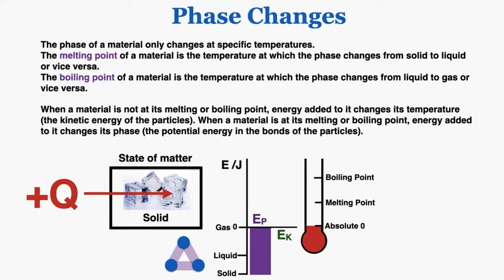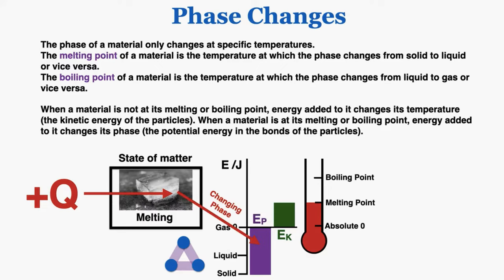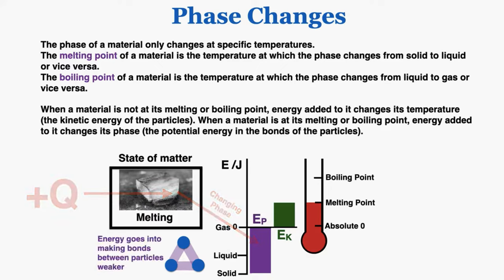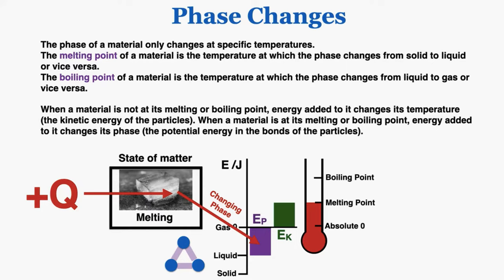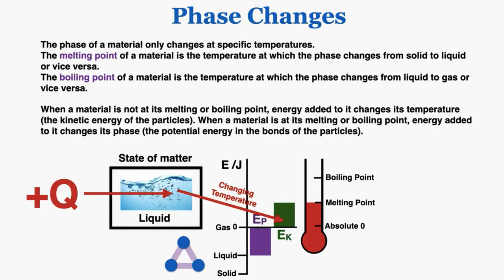The phase only changes at the melting and boiling point — if it's not at that point, all energy goes into changing temperature. It continues to add and change the temperature until the exact moment the material reaches its melting point. As soon as it reaches the melting point, the energy I'm continuously adding stops going into changing kinetic energy and starts going into changing potential energy instead, changing its phase. You'll notice the bonds between particles become weaker until the material is a liquid. At the exact moment it has become a liquid, it stops melting, and all the energy goes back into changing temperature.